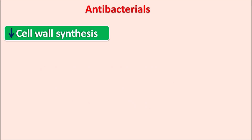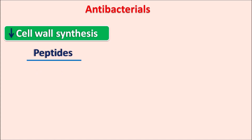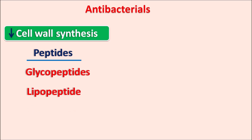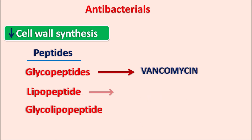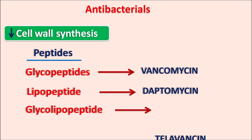Another type of cell wall synthesis inhibitors are the peptides, of which there are three types: glycopeptides, lipopeptides, and glycolipopeptides. Vancomycin is the glycopeptide; daptomycin is the lipopeptide; and televancin is the glycolipopeptide. These three peptide drugs also inhibit cell wall synthesis within the bacteria.